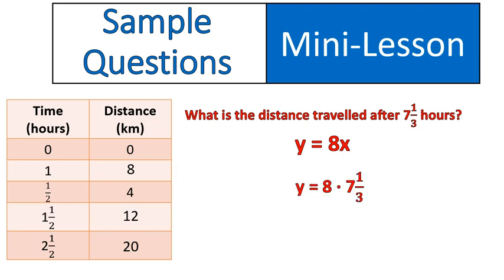So it's just 8 times 7 and 1 third, which gives me 58 and 2 thirds. So after 7 and 1 third hours, you've traveled 58 and 2 thirds kilometers.